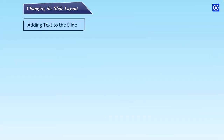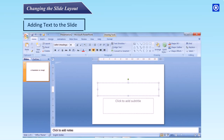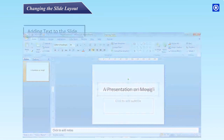Adding text to the slide: Step 1 – Click on the box and place the cursor inside for typing. Step 2 – Type letters or words as you want.